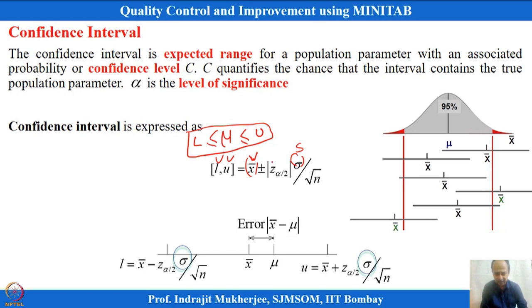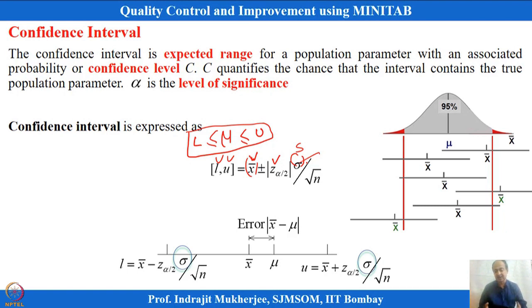The confidence interval depends on the z-statistic, assuming the population sigma is known. If sigma is not known, z will be replaced by the t-statistic. Important continuous distributions used in quality for assessment and design of experiments are: f-distribution, t-distribution, z-distribution (normal distribution), and chi-square distribution.